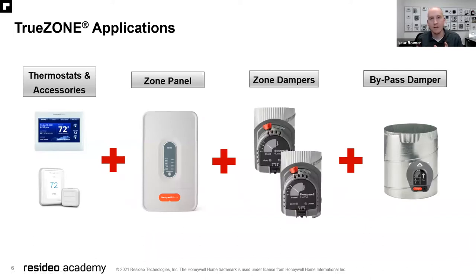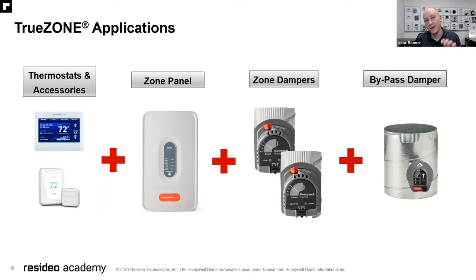When you think about a zone system, there are a few components. We have the control — our thermostat — and we may have accessories added into that ecosystem such as wireless sensors, a Redlink internet gateway if you're using a Redlink product, a wireless control, indoor sensors, outdoor sensors. We need a control that can be either a basic or advanced smart thermostat. We have our zone panel, which is the brains of the operation, our zone dampers, and a bypass damper as well, which is recommended in most zoned applications.